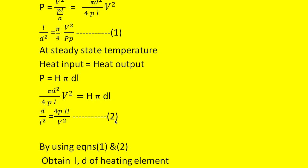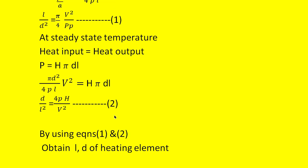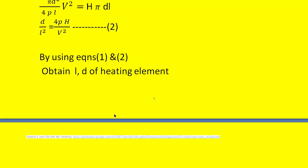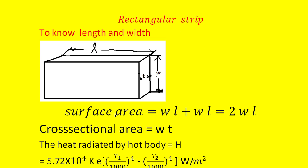Now coming to the other type of heating element design — the rectangular strip. The aim is to find the length L and the width W of the rectangular strip. L is the length, W is the width, and T is the thickness of the strip. There is one surface area on the front side and another on the back, so the total surface area of the rectangular strip is WL + WL = 2WL. The cross-sectional area of the strip is W × T.